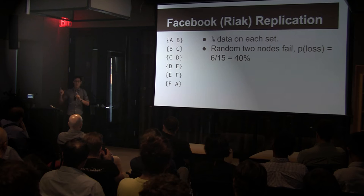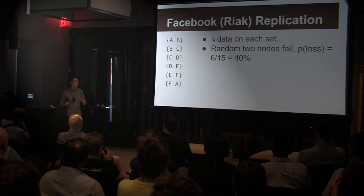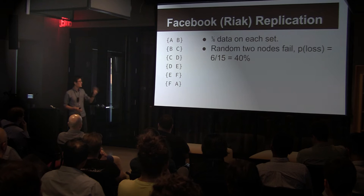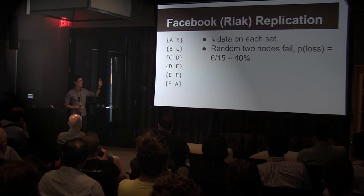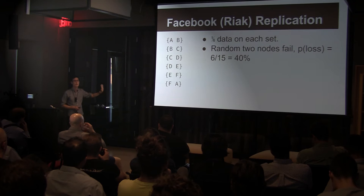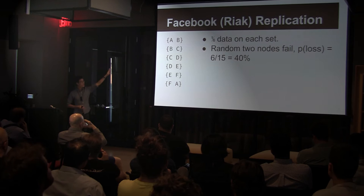In Riak, you take a key, hash it to some partition ID, which is mapped to some node on the ring, and then replication is set for subsequent nodes from the one it was mapped to. Here, because there are only six sets, we get different failure characteristics. If we have two random nodes fail, there are 15 possible combinations of two servers. Six out of 15 is the chance you'll actually lose some data, and because all data is mapped to six different sets, if you lose data you will lose one sixth of it.